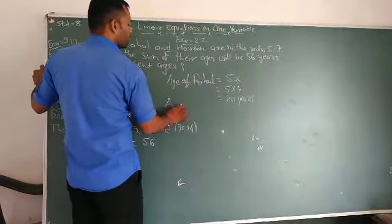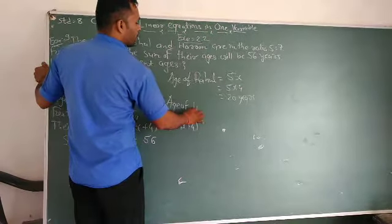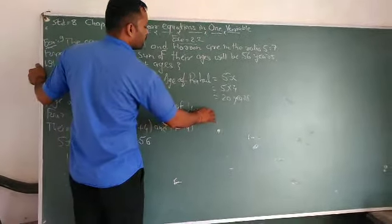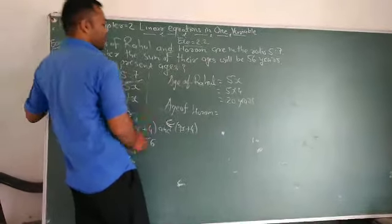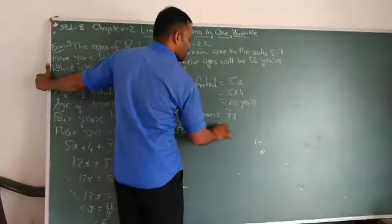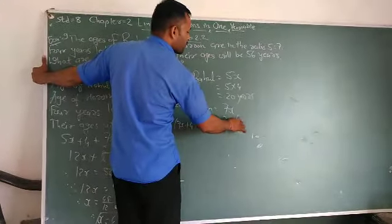Age of Harun is equal to 7x. 7 multiplied by x, which is 4, equals 28 years.